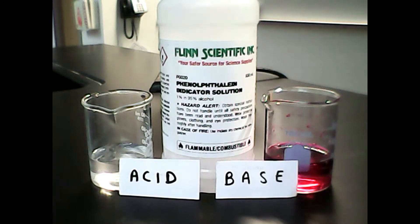Next thing we're going to need is something called an indicator. All an indicator does is tell us whether our solution is acidic or basic. It does that by changing color. You can see here that when our solution is acidic, it's perfectly clear. When our solution is basic, it's this deep pink color.